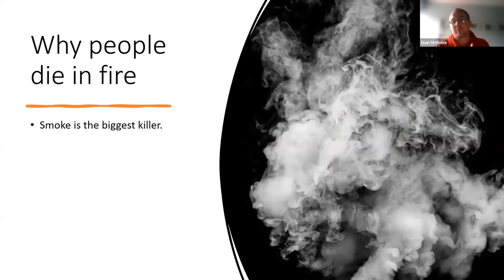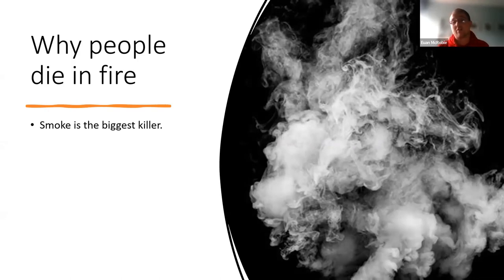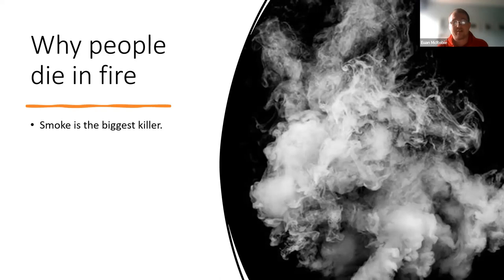Why do people die in fires? Smoke is the biggest killer. Smoke in a fire isn't just smoke — it's made up of carbon particulates, carbon dioxide, water vapor, and heat energy. The reason people mostly die is that the carbon molecule has a stronger bond than oxygen within the blood, replacing oxygen and starving the body. Breathing in two or three cups of that smoke and you're probably not going to survive.